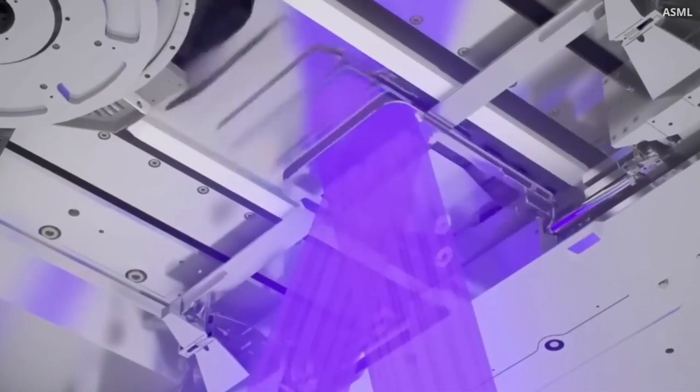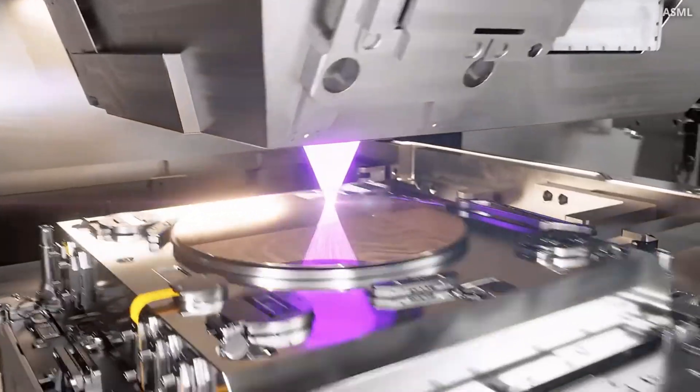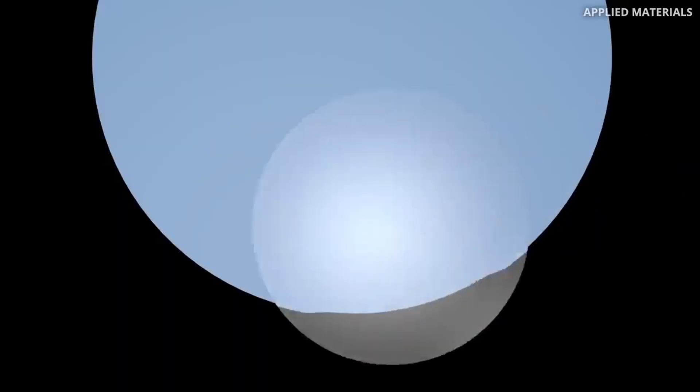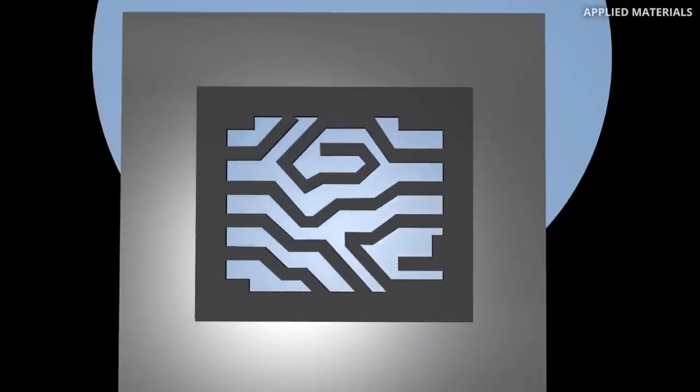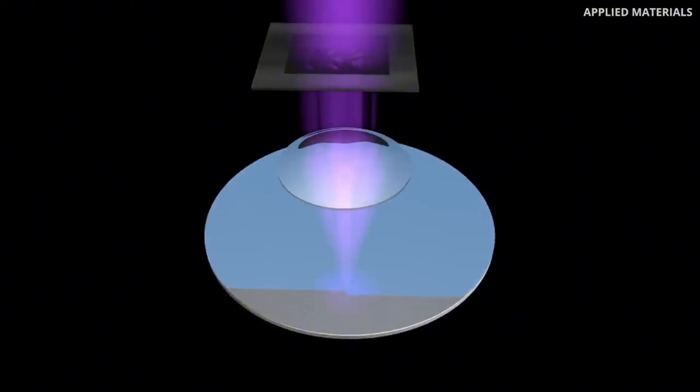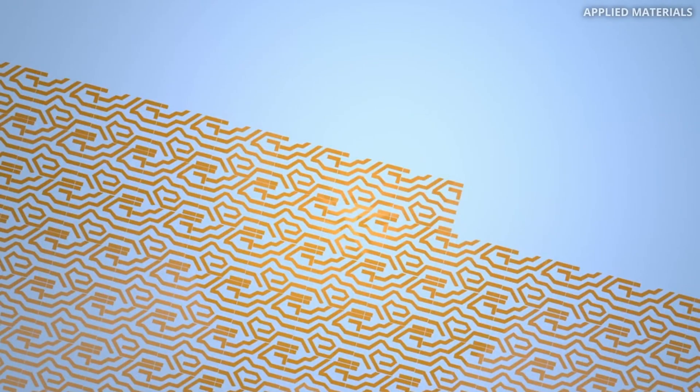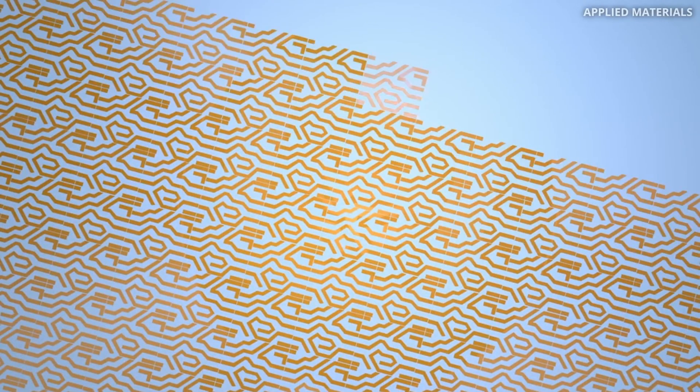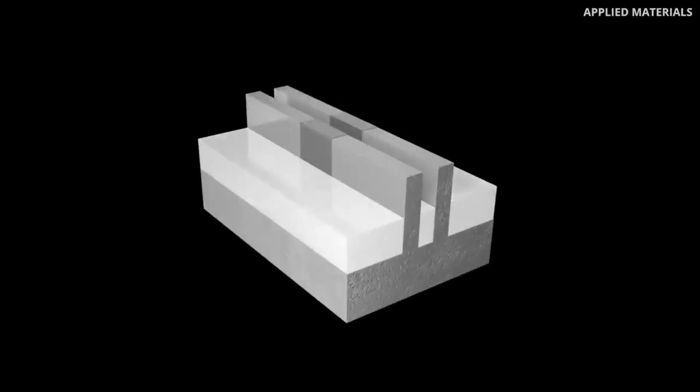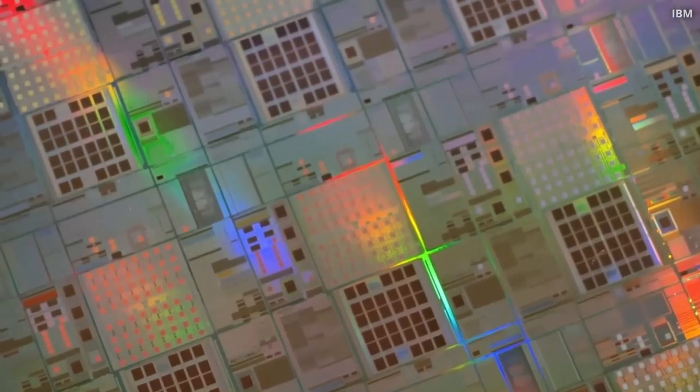Another contender is graphene, a super-thin, super-strong material made of carbon. Engineers are also exploring carbon nanotubes, tiny rolled-up sheets of graphene, to build transistors that can run at extremely low voltages. This would drastically reduce power consumption and make chips far more energy-efficient. But these materials come with challenges. They're delicate, hard to produce in large quantities, and tricky to integrate into existing designs. Still, the industry is making progress.